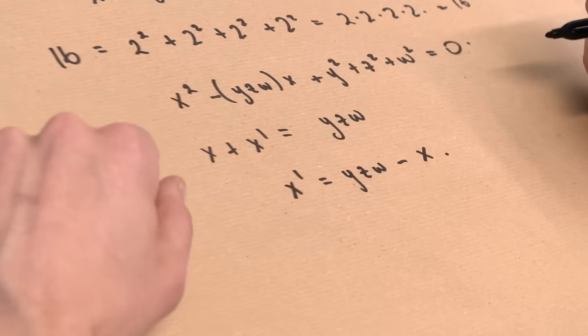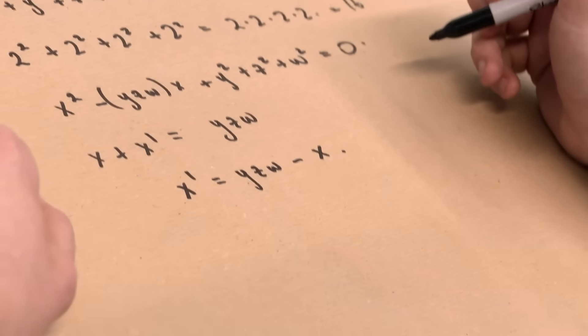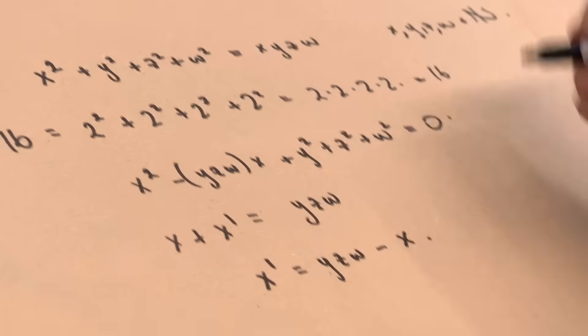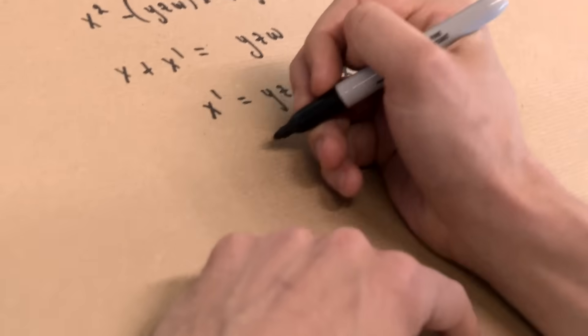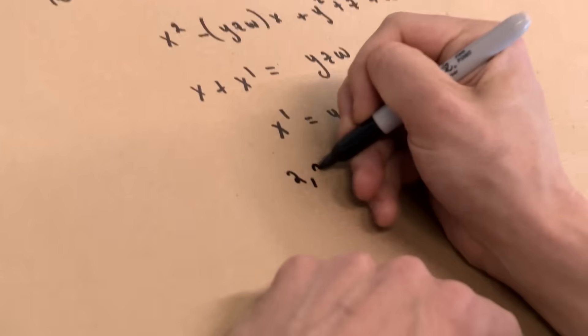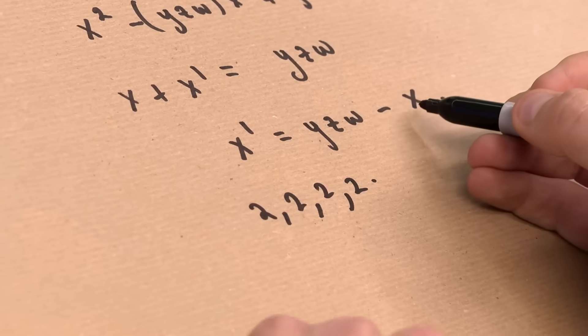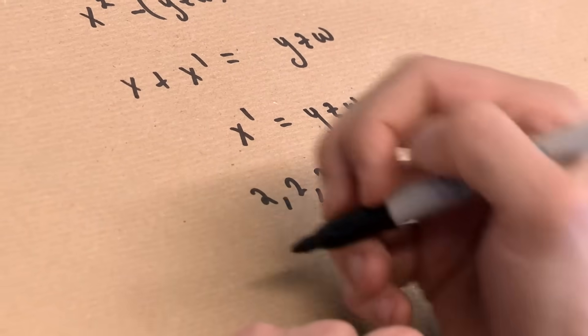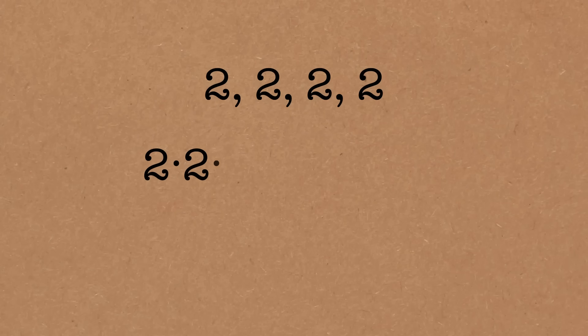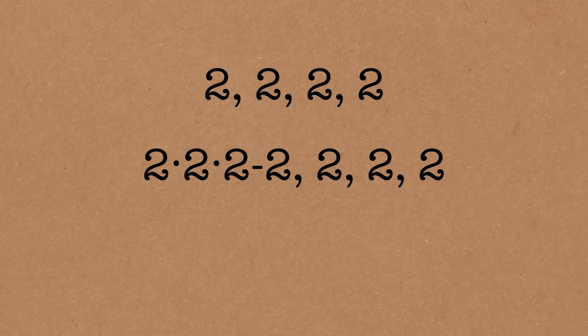We've got one set where they're all 2s. So we have the solution (2, 2, 2, 2). We can change x by this formula, which says we should replace 2 by 2 times 2 times 2 minus 2. That's 8 minus 2 equals 6. So (6, 2, 2, 2) — is that another solution? Let's see: the sum of squares would be 36 plus 4 plus 4 plus 4, which is 48. And 6 times 2 times 2 times 2 is 6 times 8, which is 48.